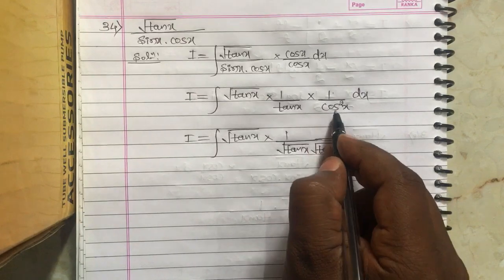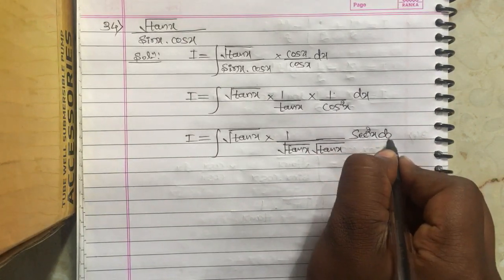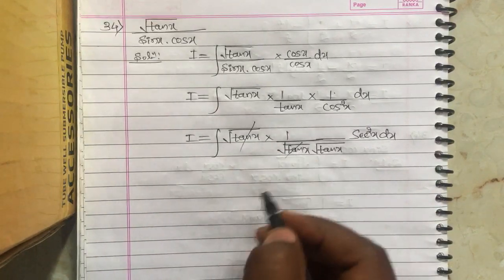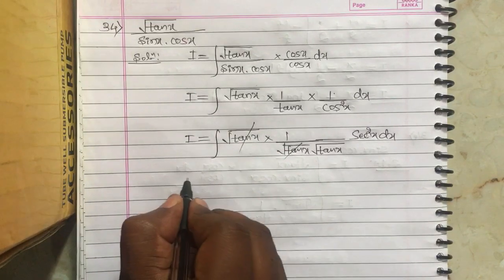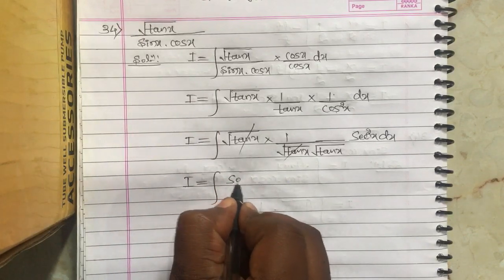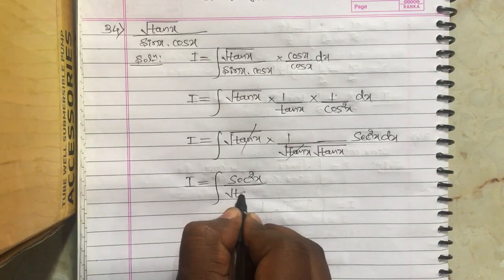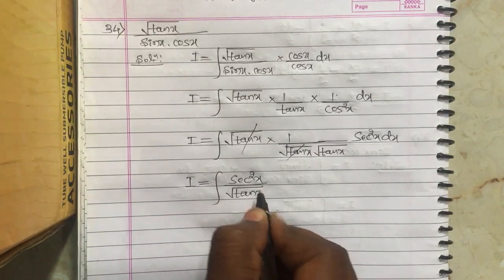Now 1 by cos square x will be secant square x dx. Here root tan x and root tan x get cancelled. I equals integral secant square x divided by root tan x dx.